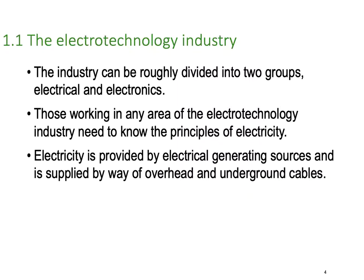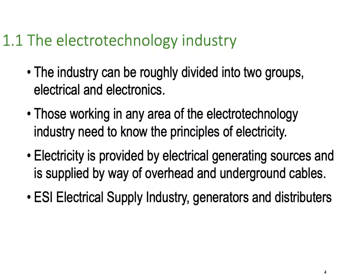Electricity is provided by generating sources and is supplied by wire, overhead, and underground cables. You've all seen very large towers to just small poles with cables on them for above ground, and underground cables you won't see at all. ESI stands for the Electrical Supply Industry — that's the abbreviation for the people who do the generating and distributing of our power.